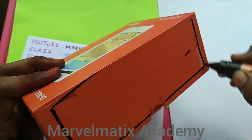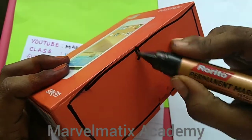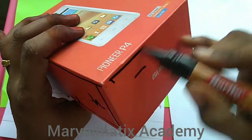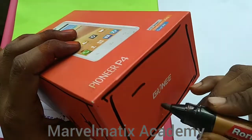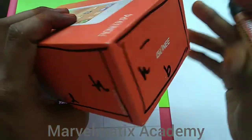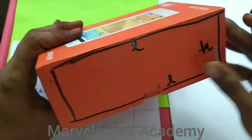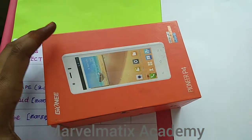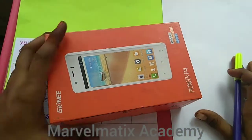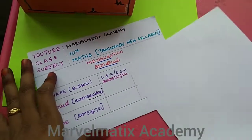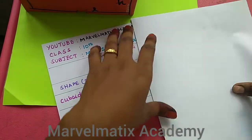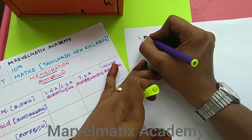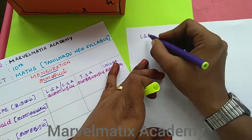Let's mark the dimensions here. This is L and this is H. This is L here. Let's mark B here, and this is H. Now we will make note of 4 faces and write how it is. First, I will write the note. First — Lateral Surface Area.